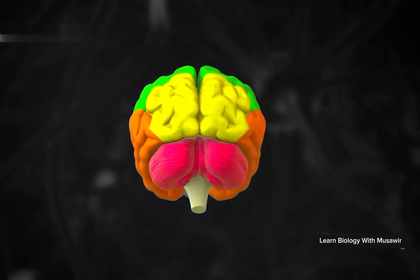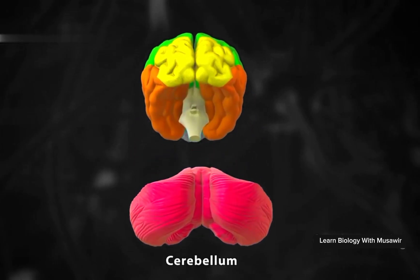The cerebellum is located in the back of the brain, just below the cerebrum. It controls balance, movement, and coordination.